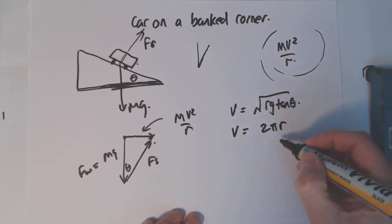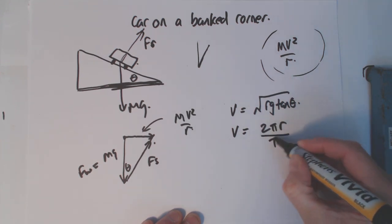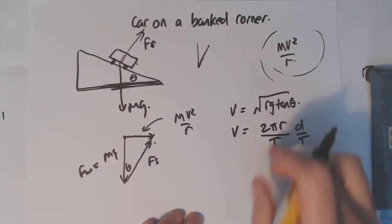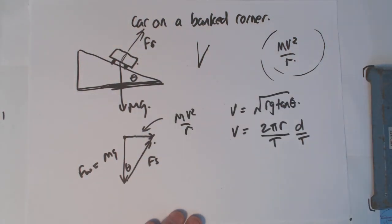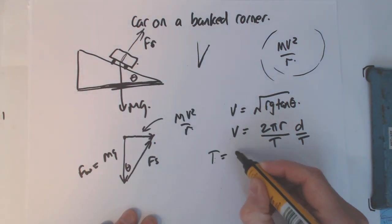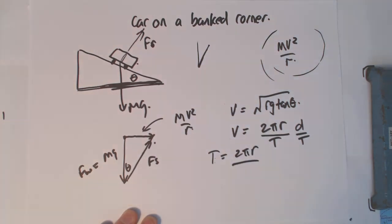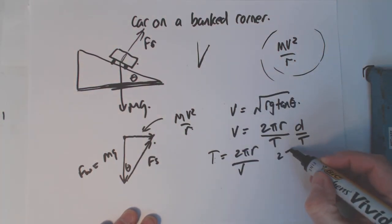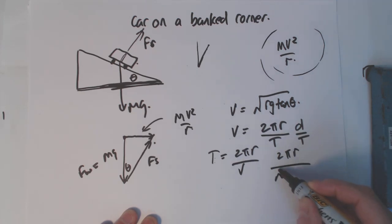2πr/T, right? Distance over time to go around the circle once. So if we equate those two, which we can do no problem, we can say T equals 2πr over the square root of rg tan θ.